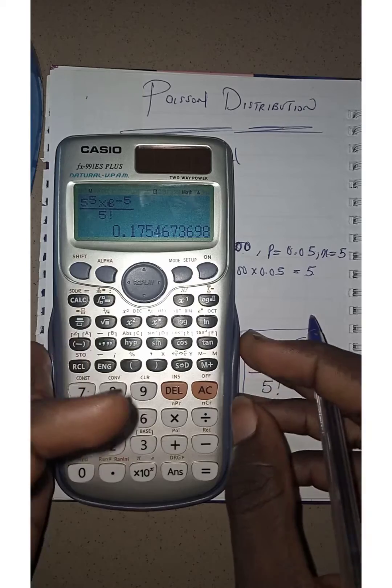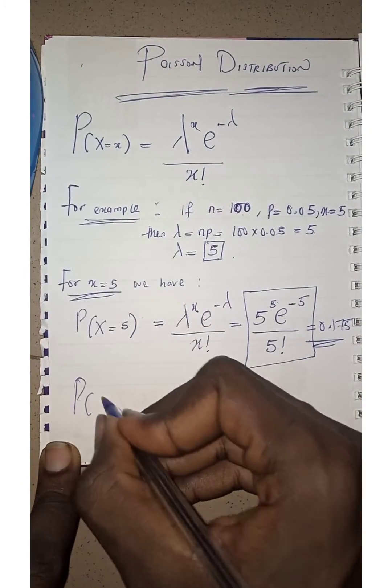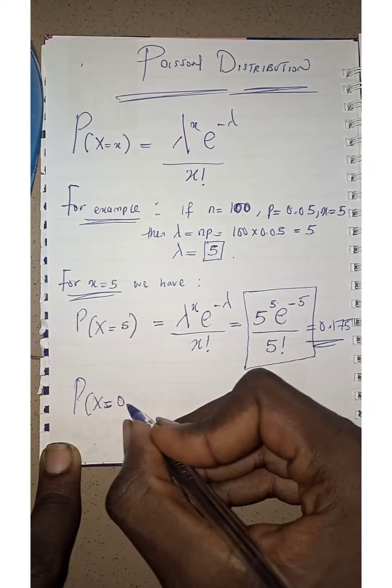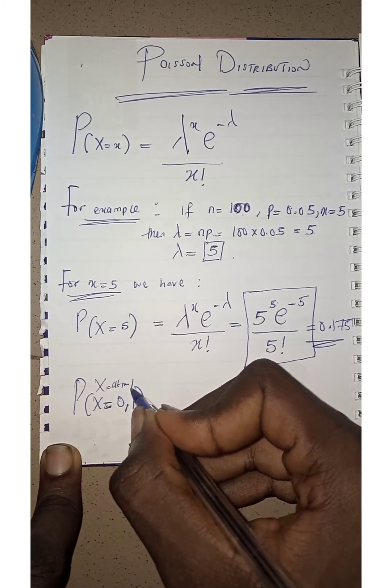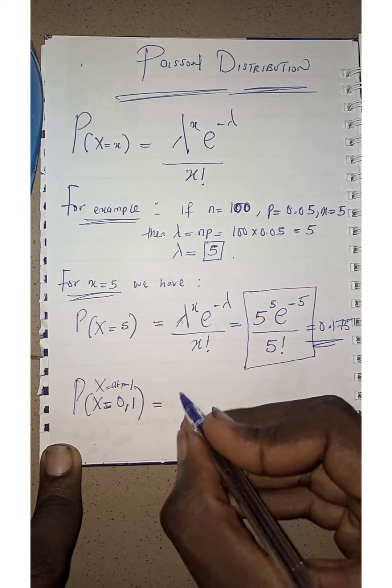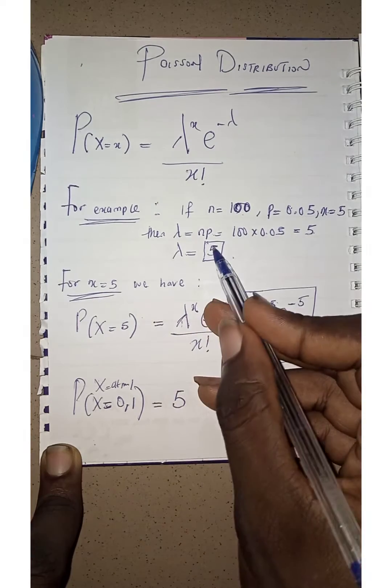So that's how to work with Poisson distribution. Let's now make another assumption. What if we have just 0 and 1? That is, this implies when x is equal to at most 1. So that means my value for lambda remains as 5.